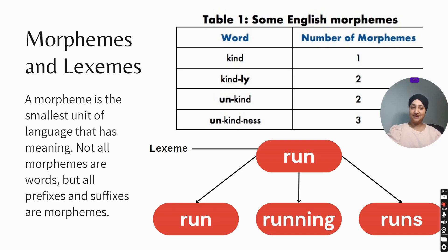Morphemes and lexemes. A morpheme is the smallest unit of language that has meaning. Not all morphemes are words, but all prefixes and suffixes are morphemes. For example, you can see in table one some English morphemes: kind has only one morpheme, kindly has two morphemes, unkind has two morphemes, and unkindness has three morphemes.